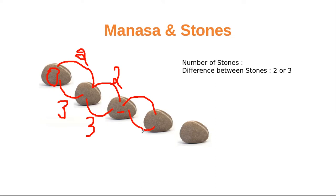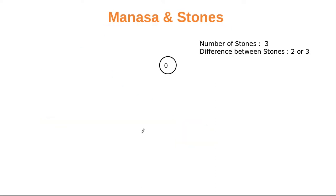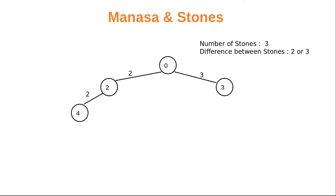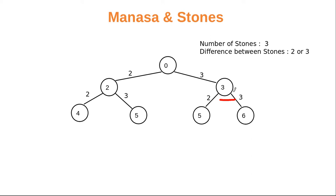Let's understand this with a tree structure. Initially the first stone is zero. The second stone can differ by two or three — if differing by two the value is two; if differing by three, the value is three. From the second stone, you again jump by two or three giving values four or five. From the position three, again the difference can be two or three, giving possible values four, five, or six.